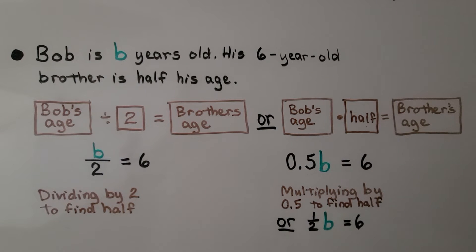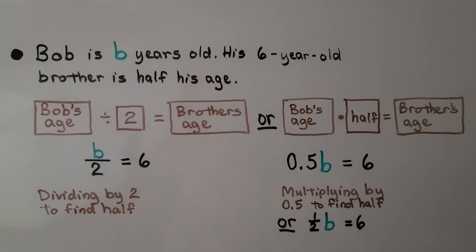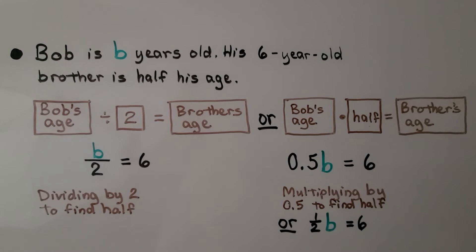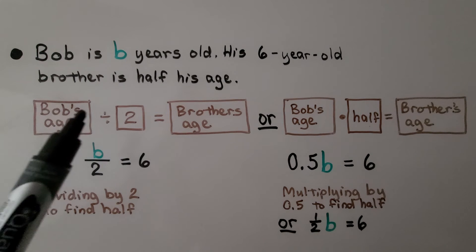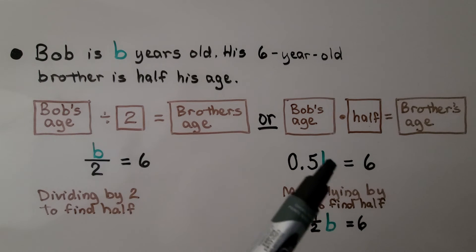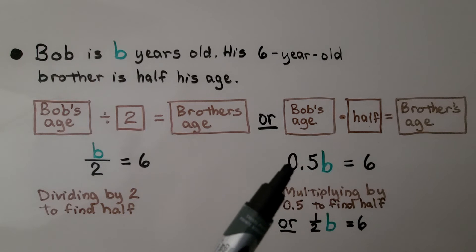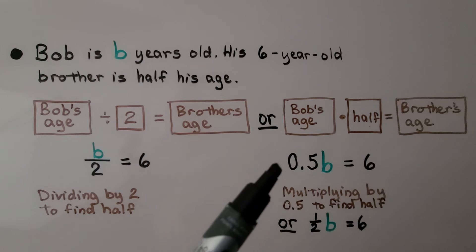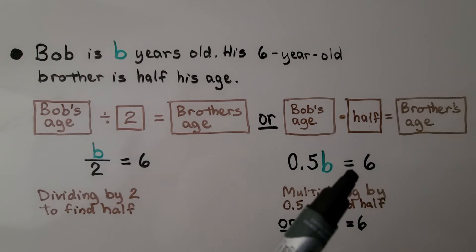Bob is B years old. His six-year-old brother is half his age. We can model this as Bob's age divided by 2 to find half. When we divide something in 2, we have halves. And that will equal the brother's age. Or, we could do Bob's age, whatever that is, B, and multiply it by 5 tenths for half. And that will equal the brother's age. We could also just use the fraction 1 half times B to equal the brother's age.